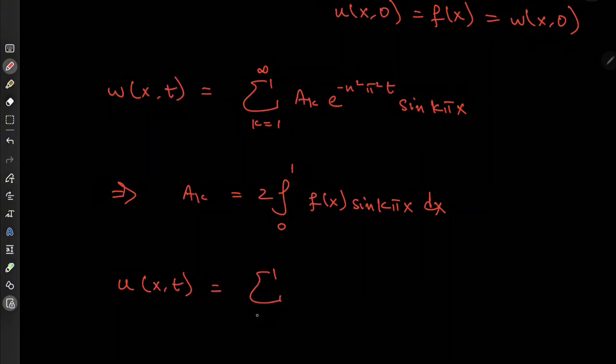So that means we are left with the sum over k from 1 to infinity of A sub k times e to the minus n squared pi squared t times e to the negative beta times t.